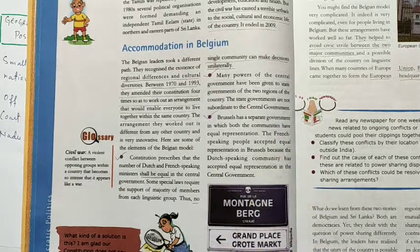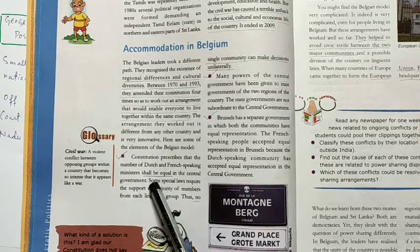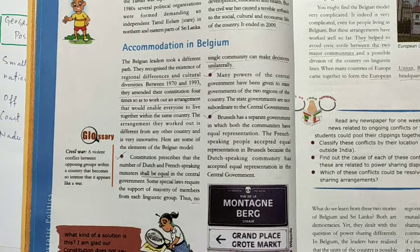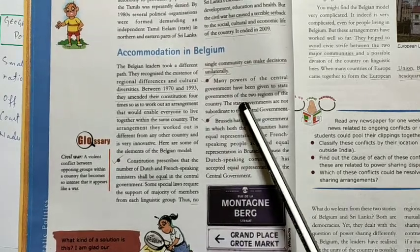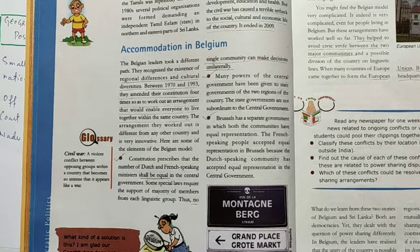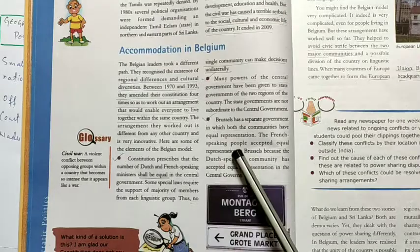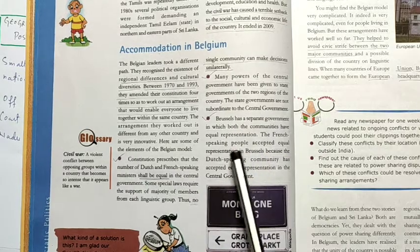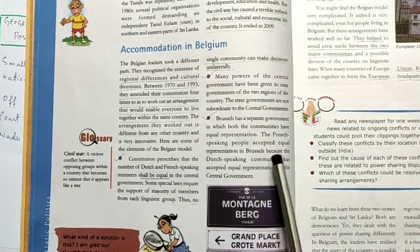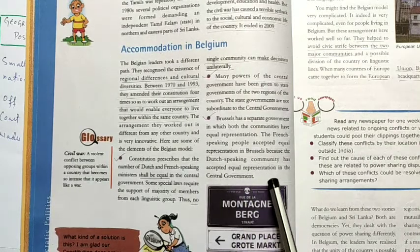The arrangement was very innovative and different from any other country. Following are some elements of the Belgian model. First element: the constitution prescribes that Dutch and French speaking leaders are equal in the central government. No single community is allowed to make decisions unilaterally — a single community cannot make decisions alone. The rule of majority over minority was removed. Second element: powers were also given to the state governments of both regions, and the state government has equal importance as the central government, not subordinate to it. Third element: Brussels has a separate government in which both communities have equal representation.